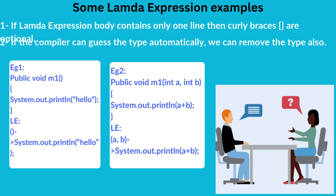Now we can see some Lambda Expression examples. If the Lambda Expression body contains only one line, then curly braces are optional. If the compiler can guess the type automatically, we can remove the type also. See the given examples for more clarity.